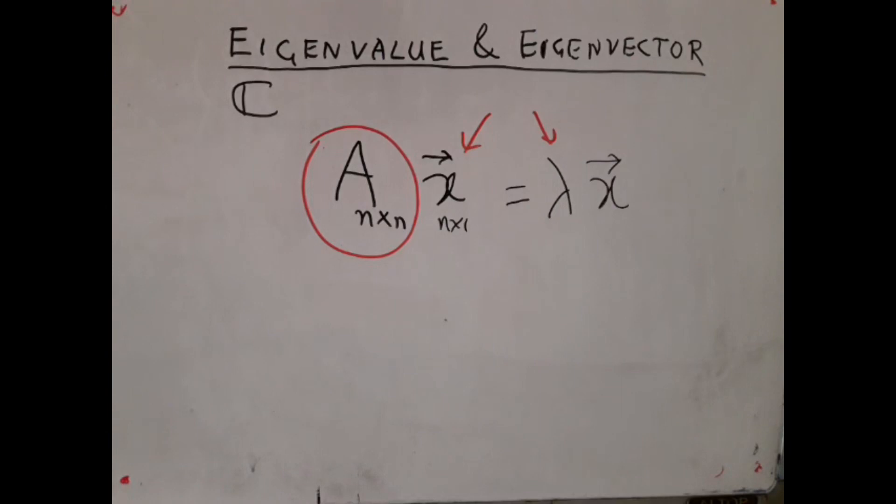So it is a non-linear system because you have got lambda times X. So two of the unknowns are multiplied here. So it is not a linear system. So our standard technique of Gauss-Jordan elimination, etc., cannot be employed directly.